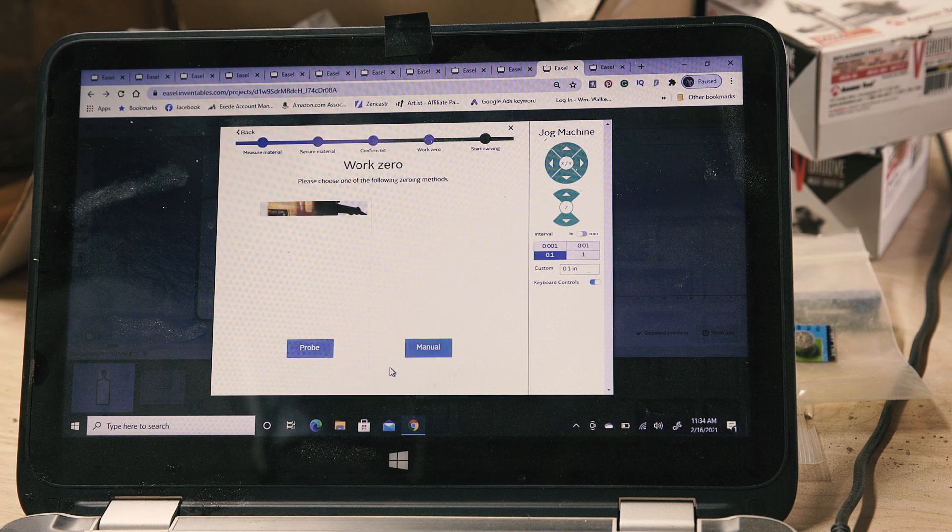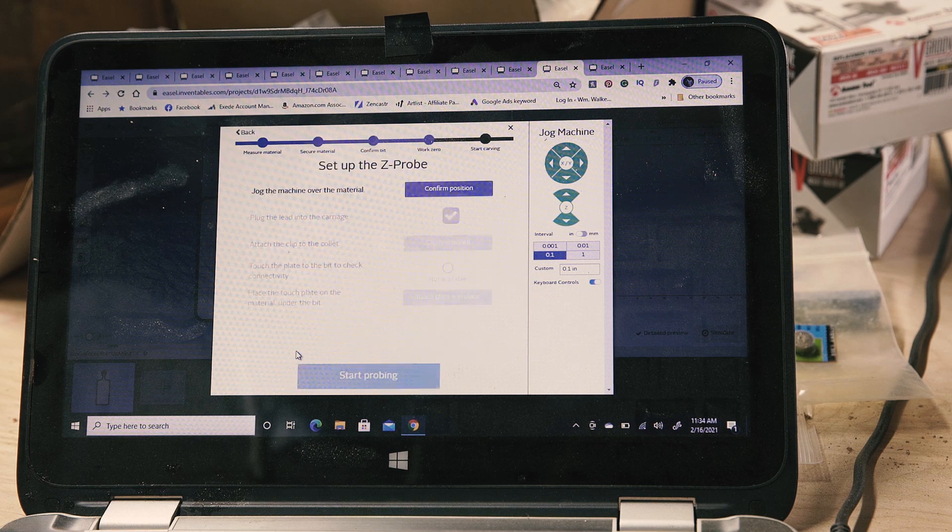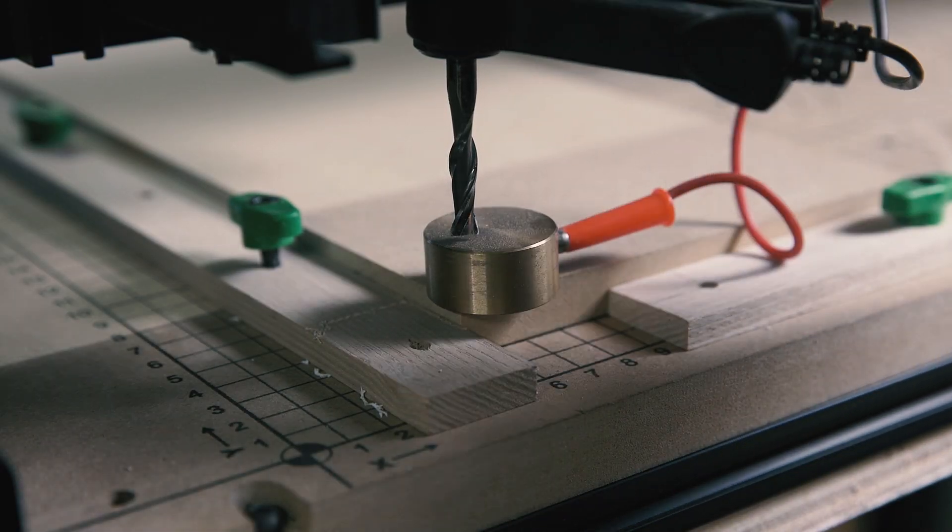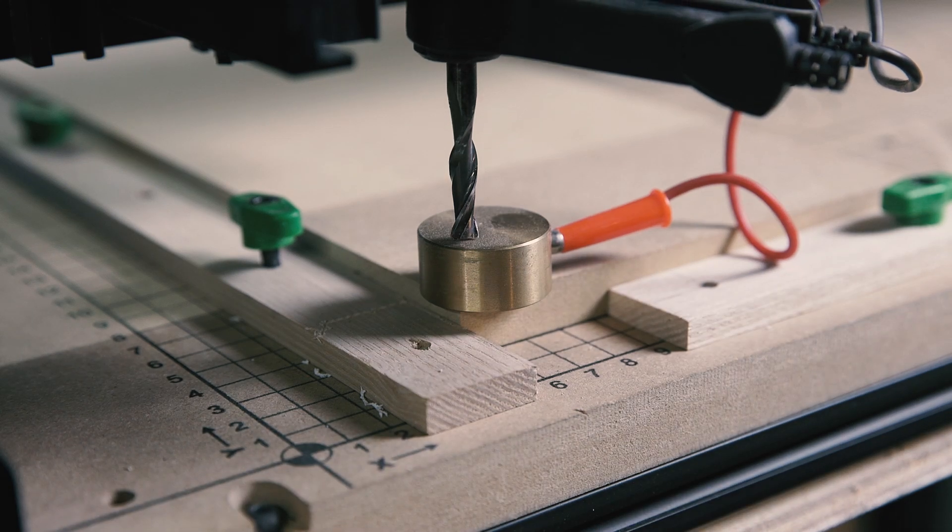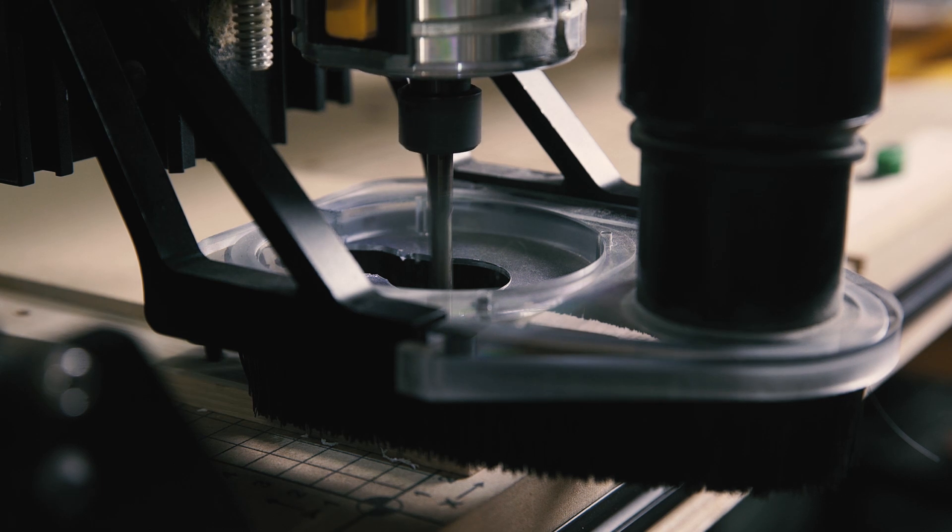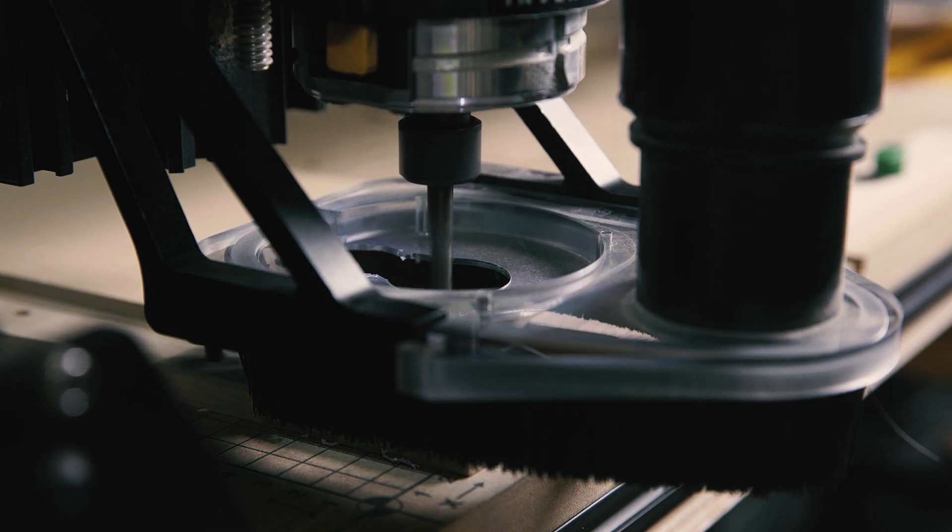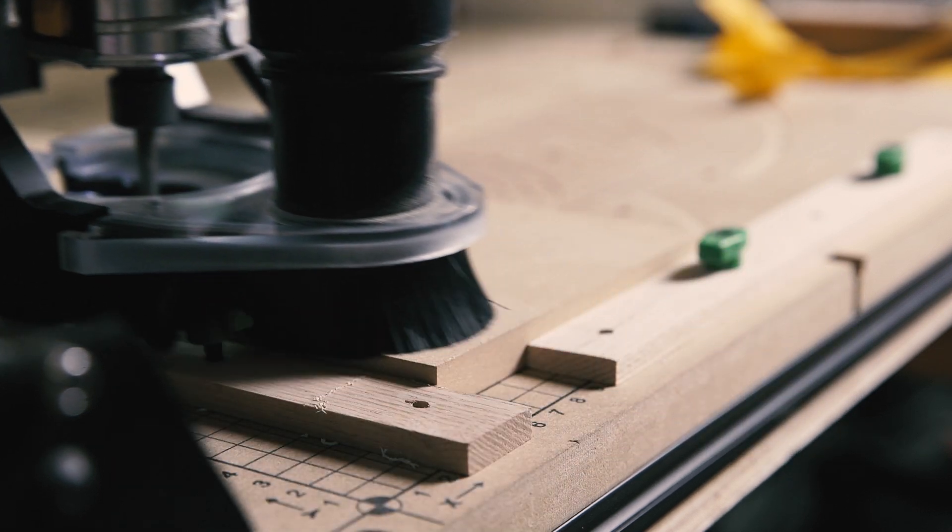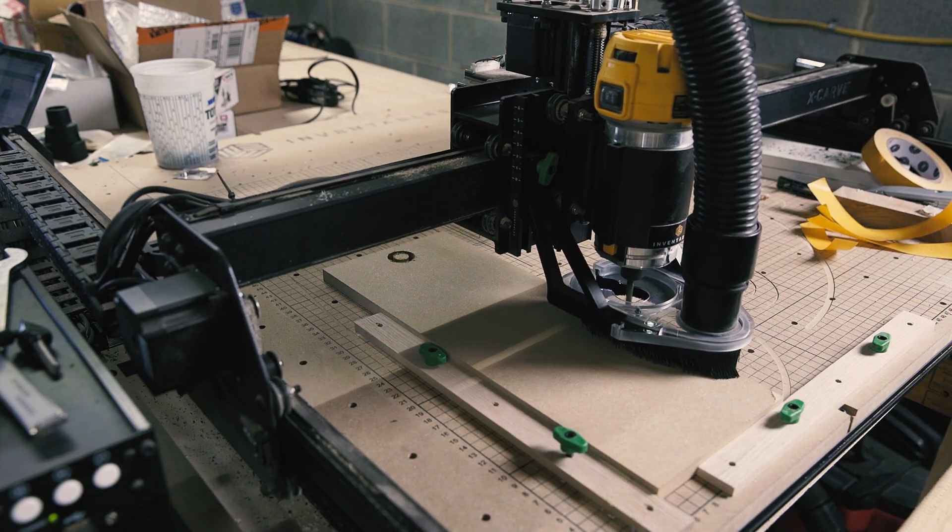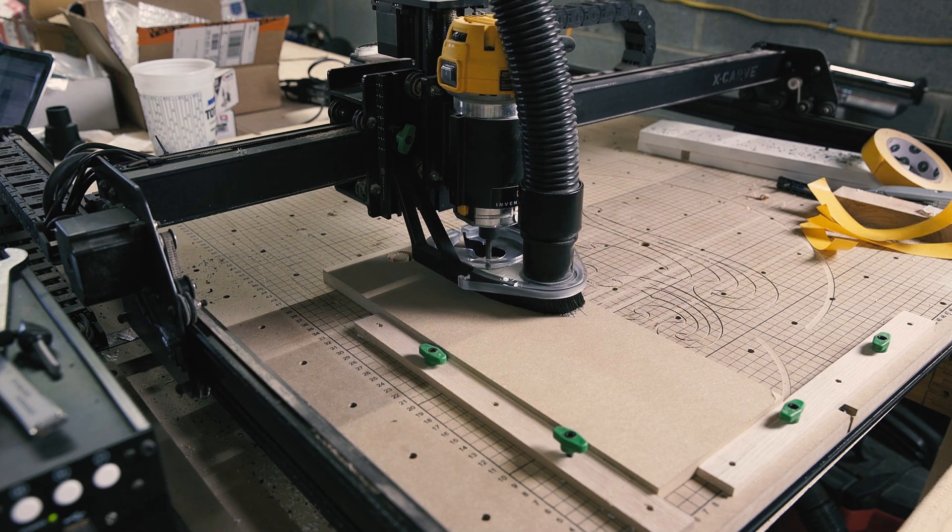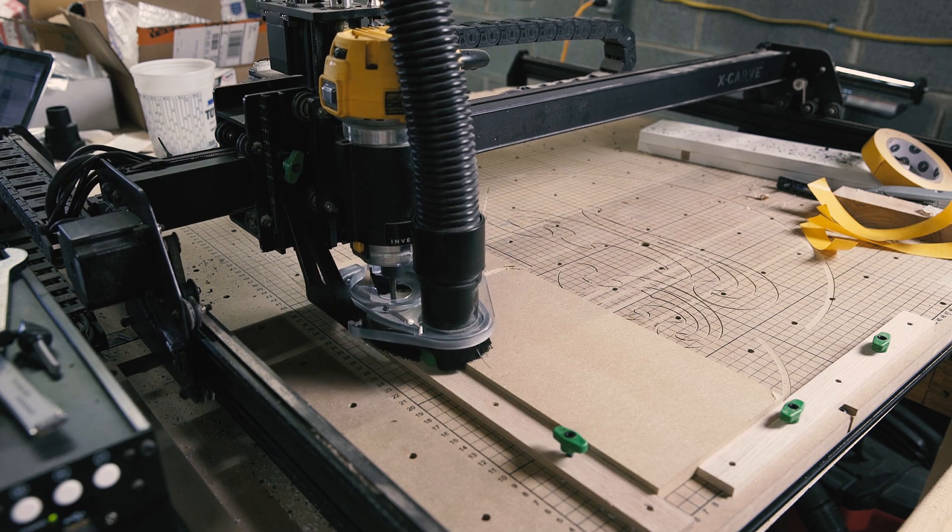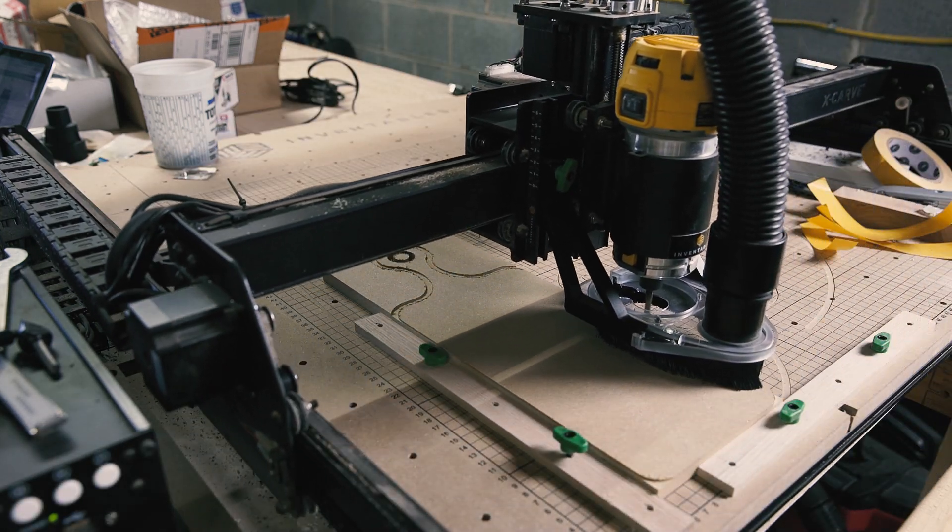With the MDF mounted, I went back to Easel to set up the X-carve for the cut, then used the Z-axis probe to give the X-carve a reference to the material and started the cut. It's pretty fun to watch the CNC cut. In soft material like this MDF, this cut took around 11 minutes.